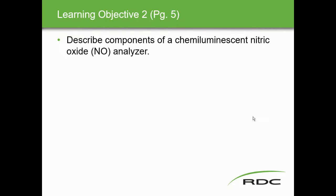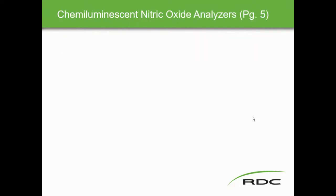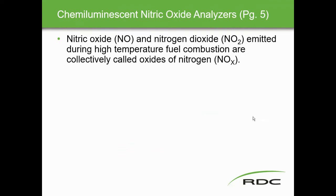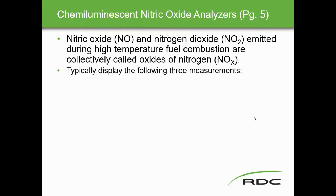Learning objective two: describe components of the chemiluminescent nitric oxide analyzer. Nitric oxide and nitrogen dioxide are emitted during high-temperature fuel combustion in stacks, and are collectively called NOx — oxides of nitrogen. The analyzer typically displays three measurements: NO (nitric oxide), NO2 (nitrogen dioxide), and NOx, which is the combination of NO and NO2.